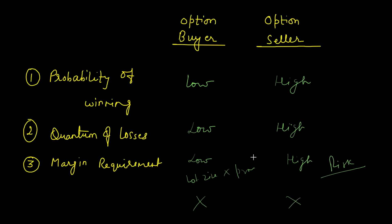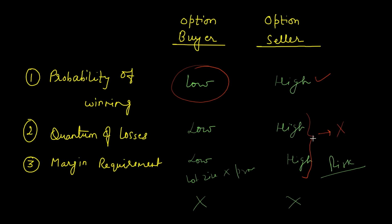So both are not advisable. Option buying is not advisable because of the low probability of winning — most of the time you will be losing, and it acts like a slow poison where you keep losing small sums that add up to a huge amount. Naked option selling is also not advisable because the quantum of losses can be unlimited and margin requirement is very high. What we should actually be doing is always entering into strategies according to the market condition, which we are going to discuss in the subsequent session.